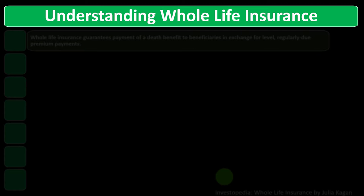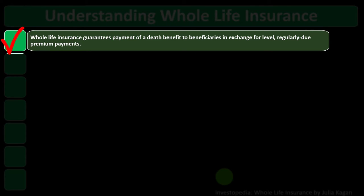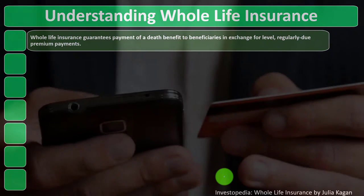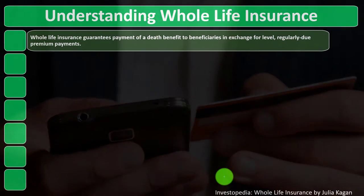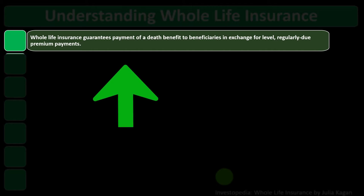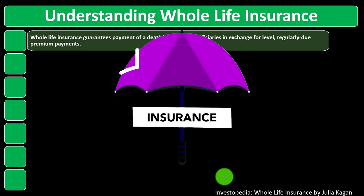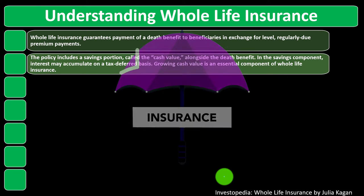Understanding whole life insurance: whole life insurance guarantees payment of a death benefit to beneficiaries in exchange for level, regularly due premium payments. We're paying premium payments primarily to get the life insurance component — the death benefit — which means that if we were to die prematurely, we're safeguarding the people dependent on us, and the death benefit would be paid out at that time.